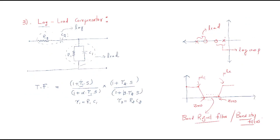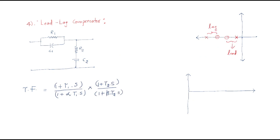Correcting the earlier statement: in the lead circuit, the zero is dominant — so zero comes first, and then it reaches the pole. In the lag circuit, the pole is dominant — so the pole comes first, and it reaches the zero. This is the main difference between the lag circuit and the lead circuit in the pole-zero configuration.